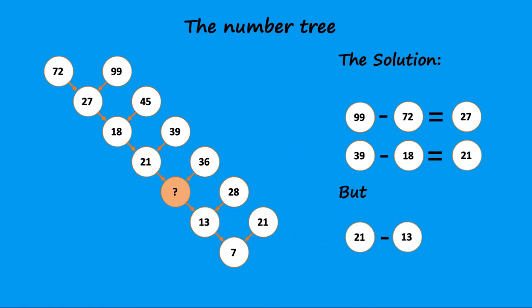But, as you progress further down the tree, you realize that 21 minus 13 does not equal 7.